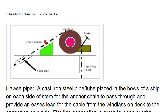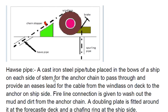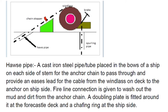The hawse pipe is a cast iron or steel pipe or tube placed in the bow of a ship on each side of the stem, for the anchor chain to pass through. It provides an easy passage for the cable from the windlass on deck to the anchor on the ship's side. That is known as the hawse pipe.